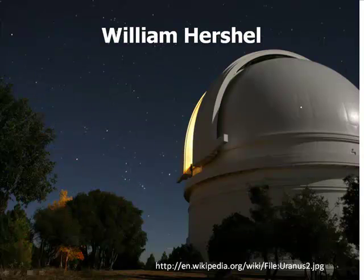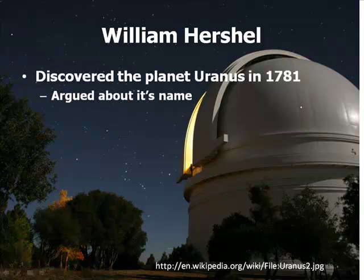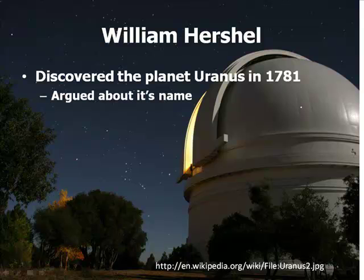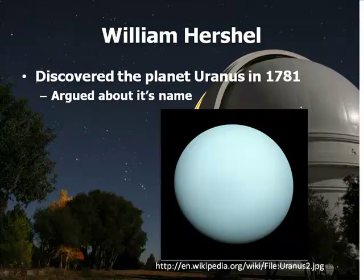We meet a guy named William Herschel, around 1780, who discovered the planet Uranus in 1781. He had a big argument about what to call it — he wanted to name it something like St. George after the king at the time. Uranus, as we now know, is kind of this blue planet. He discovered it and got to name it. The name came from some Greek god.